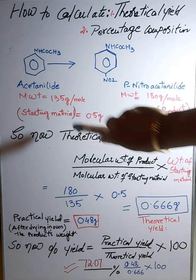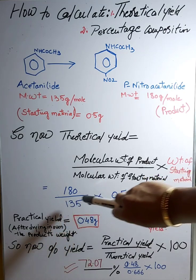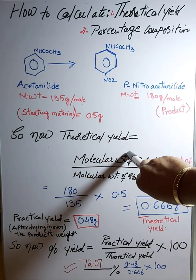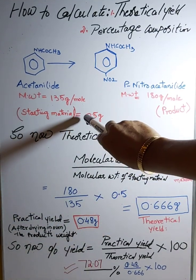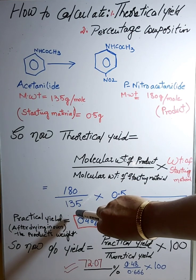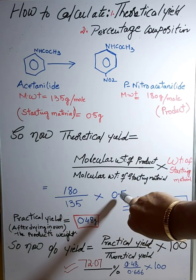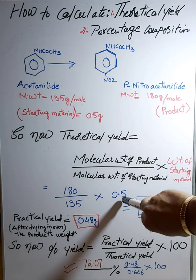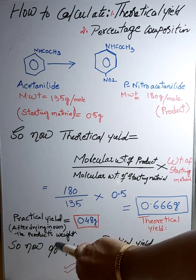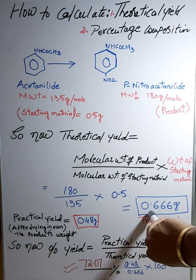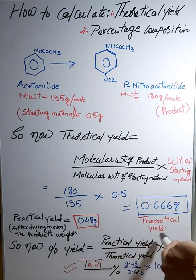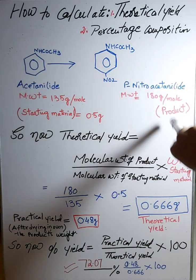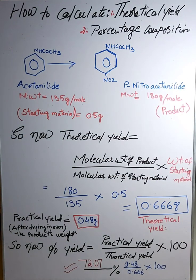So we put in: 180 grams (molecular weight of product) divided by 135 grams (molecular weight of starting material), multiplied by 0.5 grams (weight of starting material). When you do this calculation, the theoretical yield equals 0.666 grams. This is how you calculate the theoretical yield of any compound prepared in your organic chemistry lab.